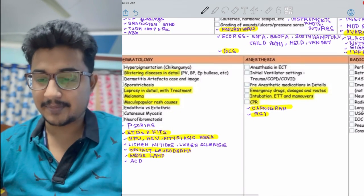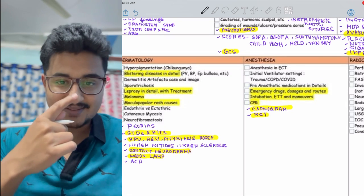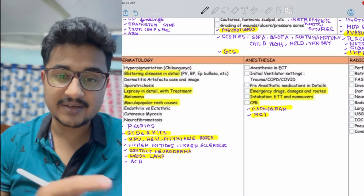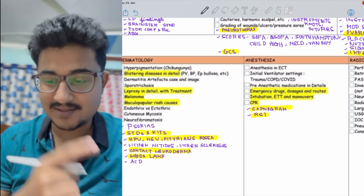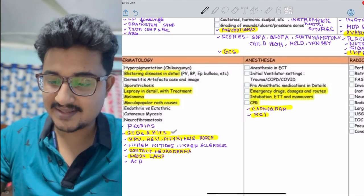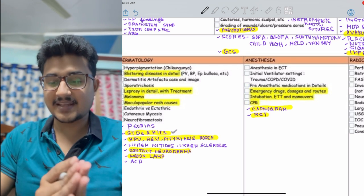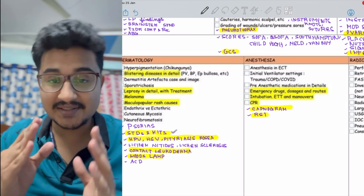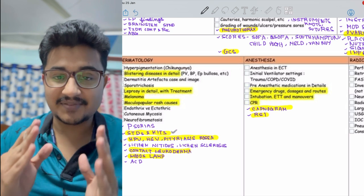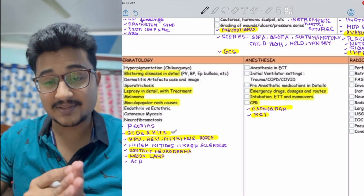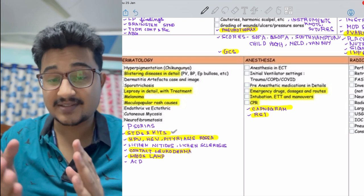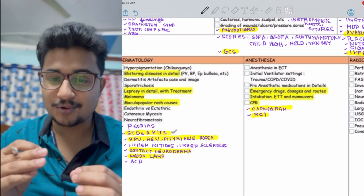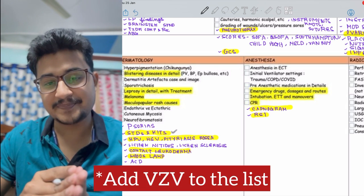Now coming to smaller subjects like my subject dermatology. The blistering disorders are important, you have to remember hyperpigmentation disorders. Chikungunya - the cheek sign was given in 2021 INICET, a hyperpigmented patch in the nose. STDs this year, HPV, HSV, leprosy - all these infections are very important.